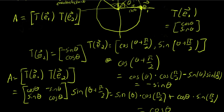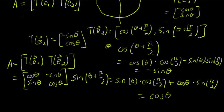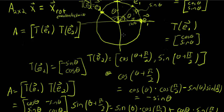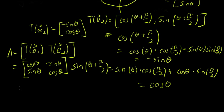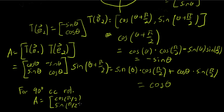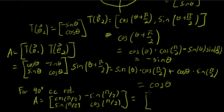Let's work an example. Say we wanted to rotate a vector x 90 degrees counter-clockwise. For a 90-degree counter-clockwise rotation, A equals the matrix with cosine(pi/2) and sine(pi/2) in the first column, and -sine(pi/2) and cosine(pi/2) in the second column. Plugging in the numbers, we get the matrix (0, 1, -1, 0).